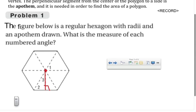In problem one, before we get into finding the area of these polygons, let's ready ourselves by talking about the angle measures inside this polygon. Notice that radii have been drawn, notice that an apothem has been drawn. How do you think we would find the measure of angle one in this regular hexagon?